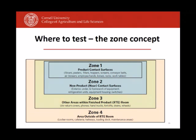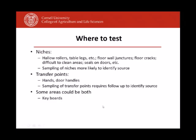In addition to sampling different zones, you need to sample different functional areas and niches — hollow rollers, hollow table legs, floor-wall junctures, and cracks in the floors are essential sampling locations. These are the places Listeria can survive. You also need to sample transfer points such as door handles and high-traffic areas to understand whether Listeria is being moved around. If it is, that suggests challenges with your GMPs.